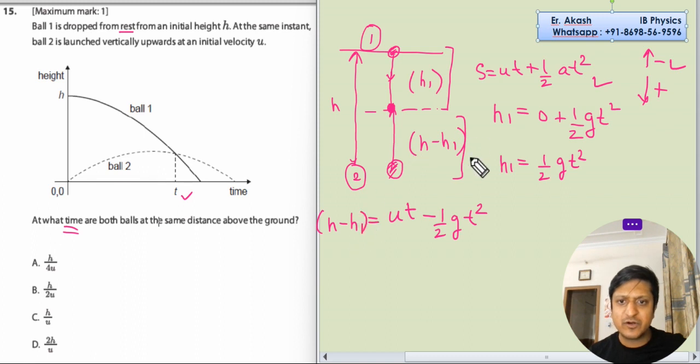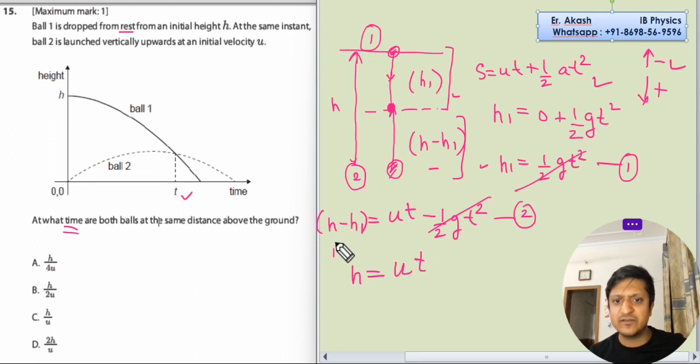So this is for lower part and h1 was for upper part. Then we will add both the equations 1 and 2. We will get that h equals ut. What we have done is equation 1 plus equation 2. This portion will go off with this, so we will be left with ut.